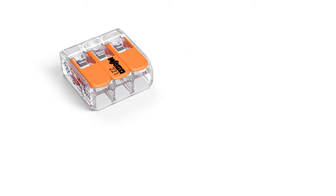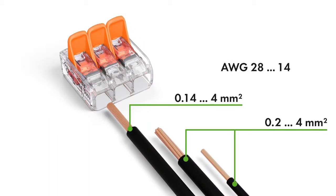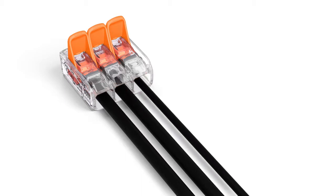The compact splicing connectors for all conductor types feature a large connection range: 0.14 to 4 square millimeters fine-stranded and 0.2 to 4 square millimeters solid and stranded, 28 to 14 AWG. This flexibility permits a wide range of applications, especially when conductors of different types and different sizes are used together.